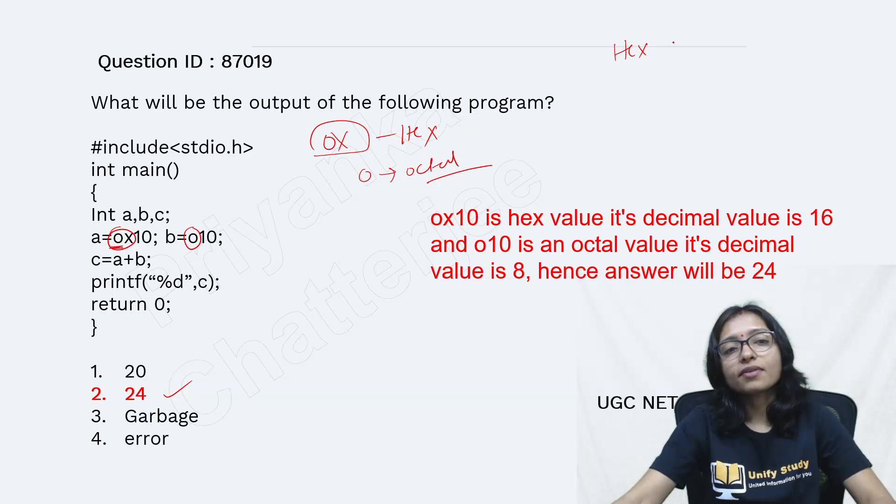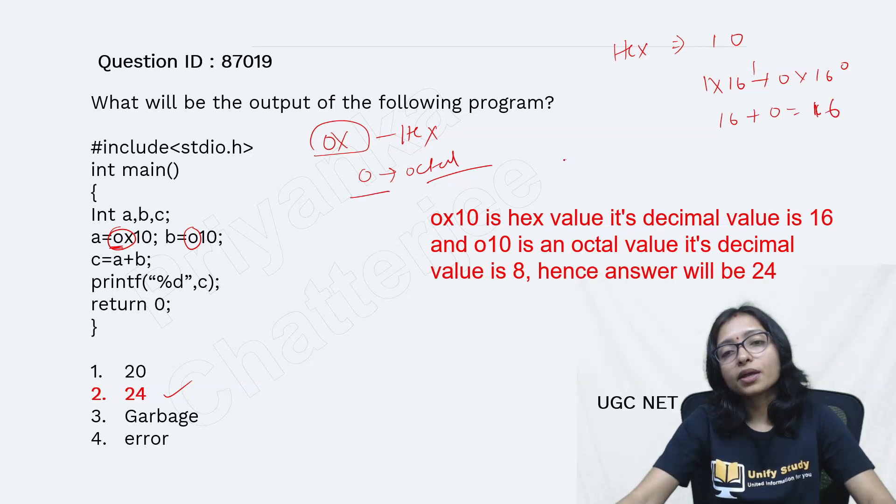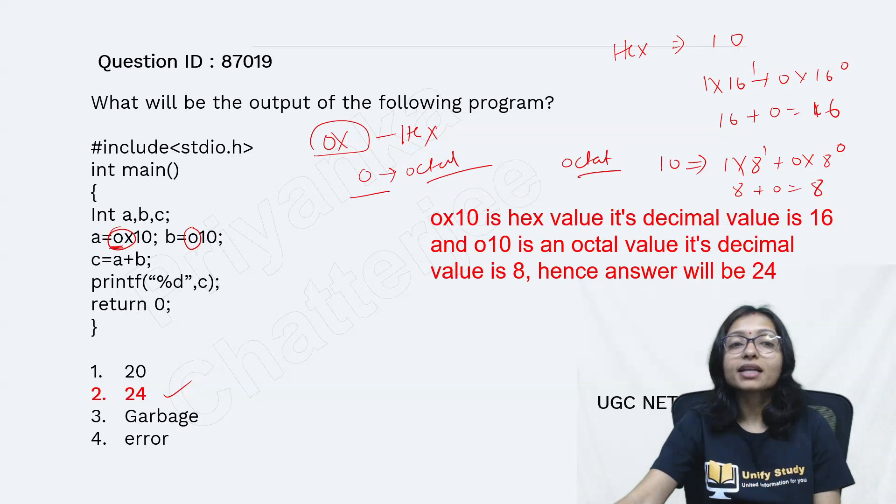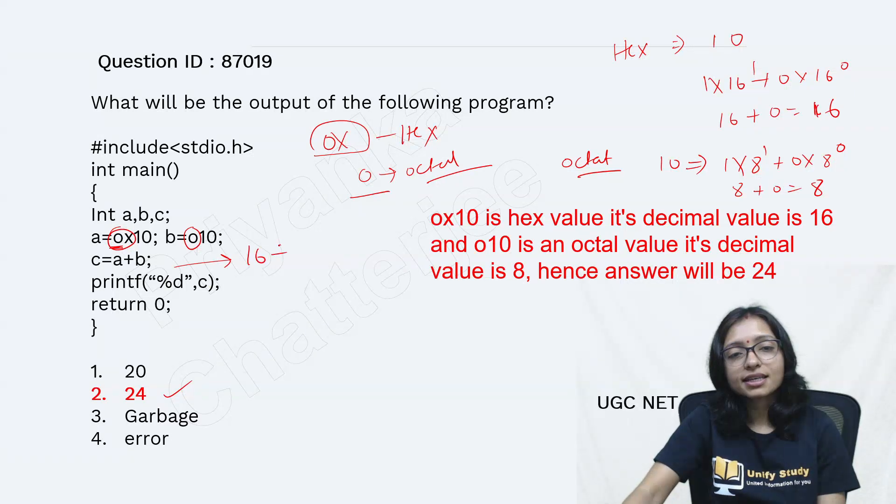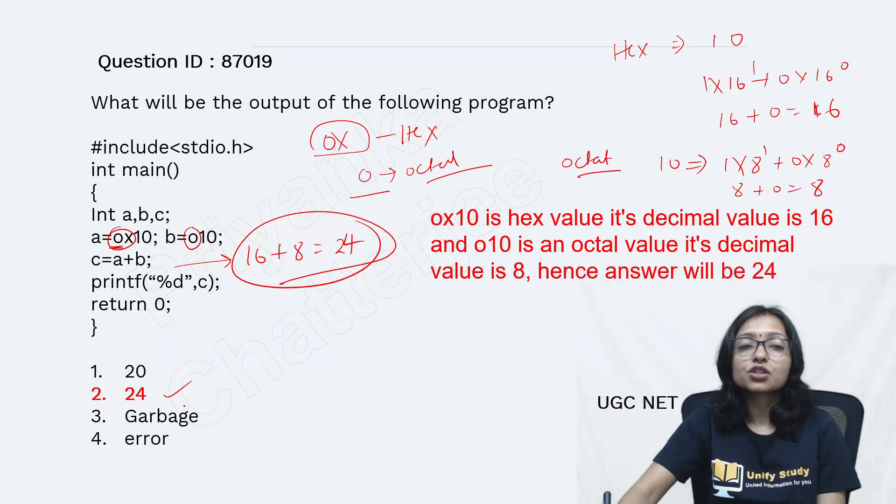In hexadecimal, whenever I am writing 1, 0, 1, 0 means 1 multiplied to 16 to the power 1 plus 0 multiplied to 16 to the power 0. That is 16 plus 0, means it is 16 itself. And in octal, whenever you are going for octal 10, it is 1 multiplied to 8 to the power 1 plus 0 multiplied to 8 to the power 0. This is 8 plus 0, that is 8. So what is the total here? A plus B. This is 16 plus 8, 24 is the total. That is why your answer is 24.